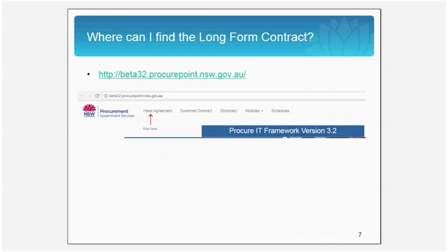The long-form contract can be found by clicking on the link provided. The latest and greatest version of Procure IT, which is Procure IT version 3.2, went live on the 1st of July 2017 and became mandatory as of the 1st of September 2017. Please note, this webinar will not address the changes brought by version 3.2.